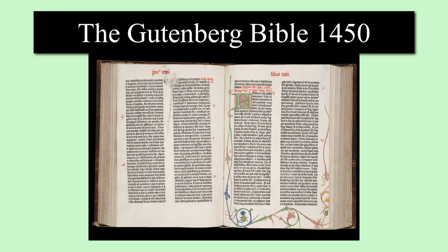Gutenberg entered into a partnership in 1450 with Johann Fust, a local merchant, to help finance his work. Gutenberg set about to create his first typographic book, the 42-line Bible. This is still today one of the greatest examples of the printer's art.